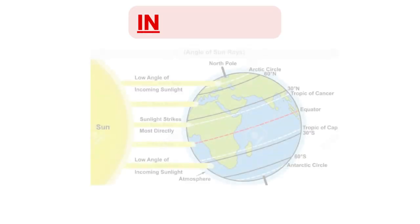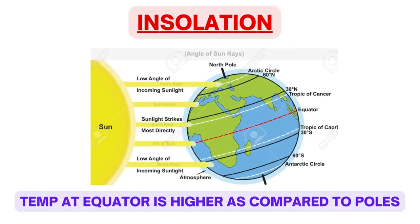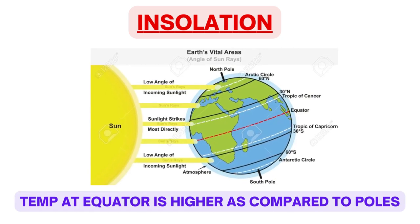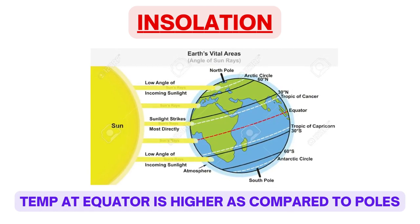Equator gets more heat as compared to the poles due to the angle of incidence of sun rays. Distance-wise, there is negligible difference between sun to equator and sun to poles. Due to the angle of incidence, the heat received per unit area at the equator is more as compared to the poles. That is why the temperature at the equator is higher compared to temperature at the poles.